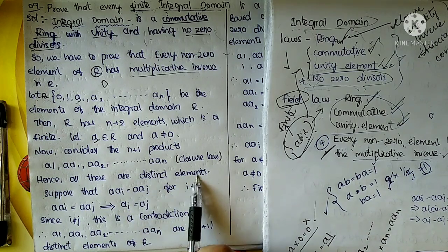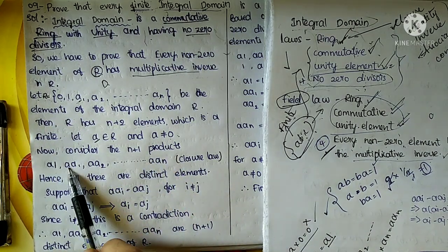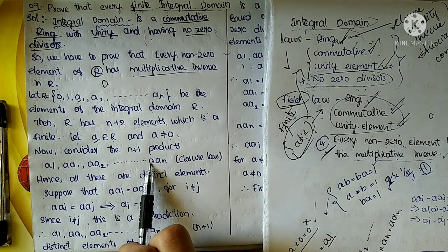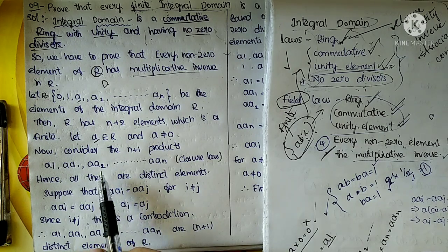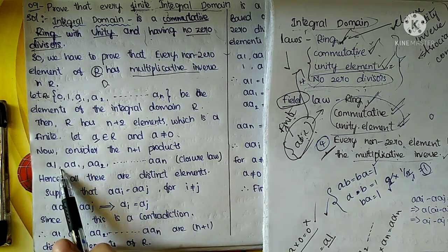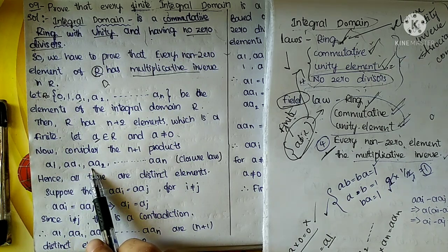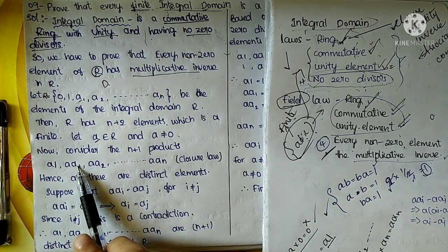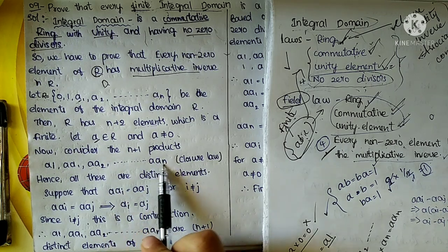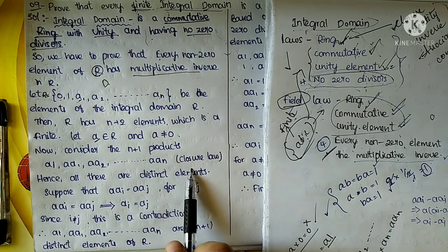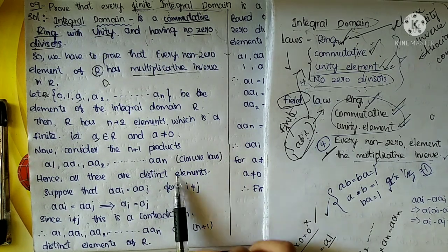Hence all these products a·a1, a·a2, and so on are distinct elements. We can prove this. Suppose a·ai equals a·aj for i not equal to j. Then by the cancellation law we can cancel a from both sides, giving ai equals aj. But i is not equal to j, so ai cannot equal aj — this is a contradiction.